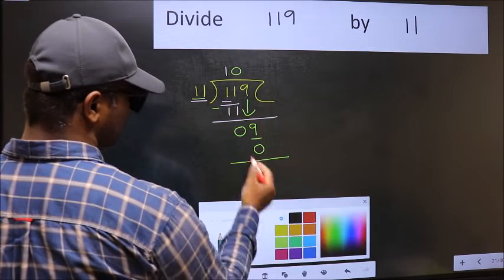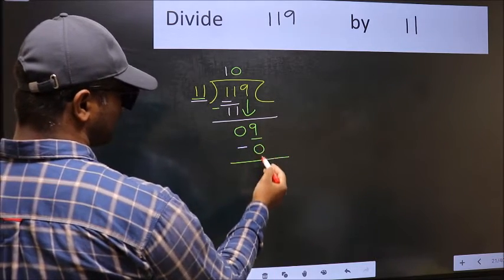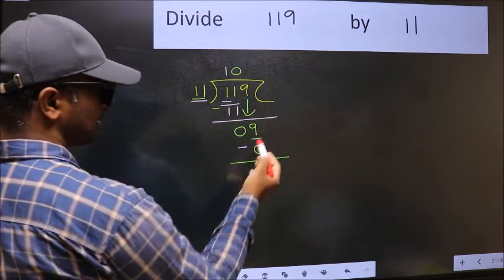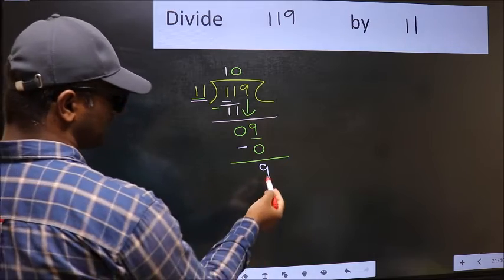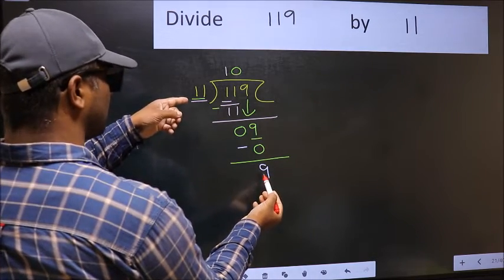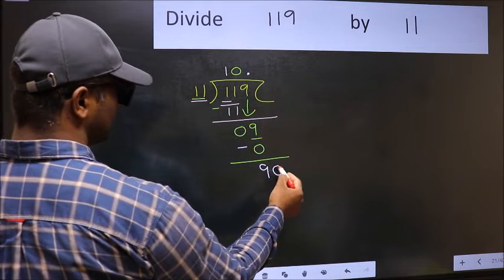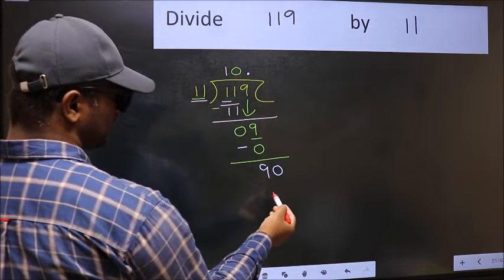Now you should subtract: 9 minus 0 is 9. Over here, we did not bring any number down, and 9 is smaller than 11. So now you can put dot and take 0. So 90.